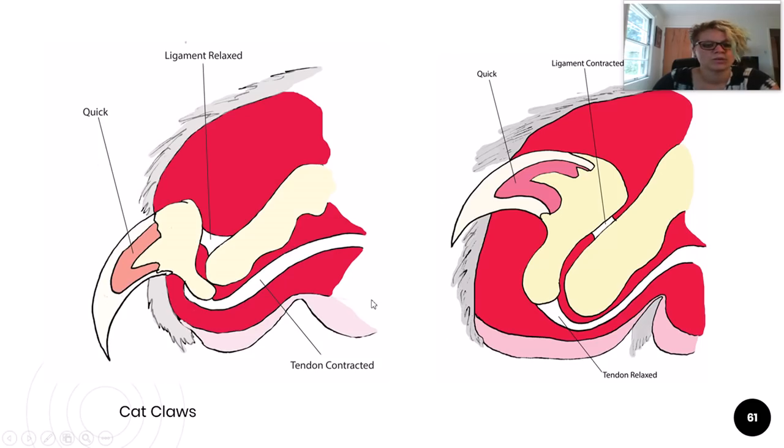One of cats' many superpowers is their ability to extend and retract their claws. They are the only companion animal who has this ability, and it helps keep those claws razor sharp. In fact, the ability to retract claws is pretty uncommon in the animal kingdom. Only a handful of animals can do it, and most of those are cats or cat-like creatures.